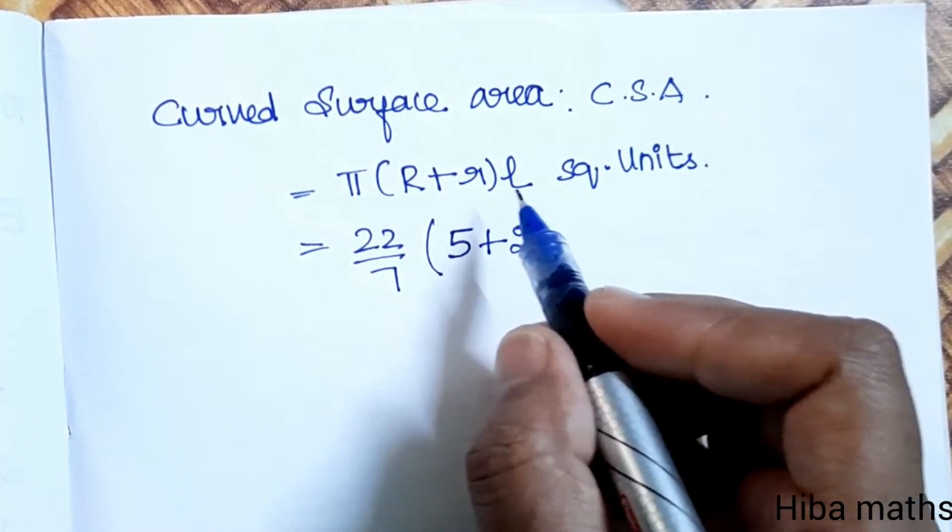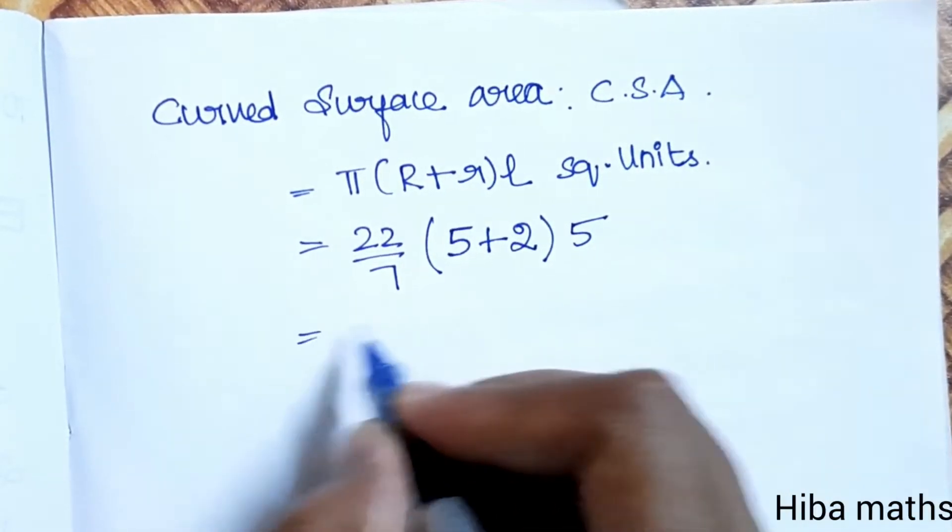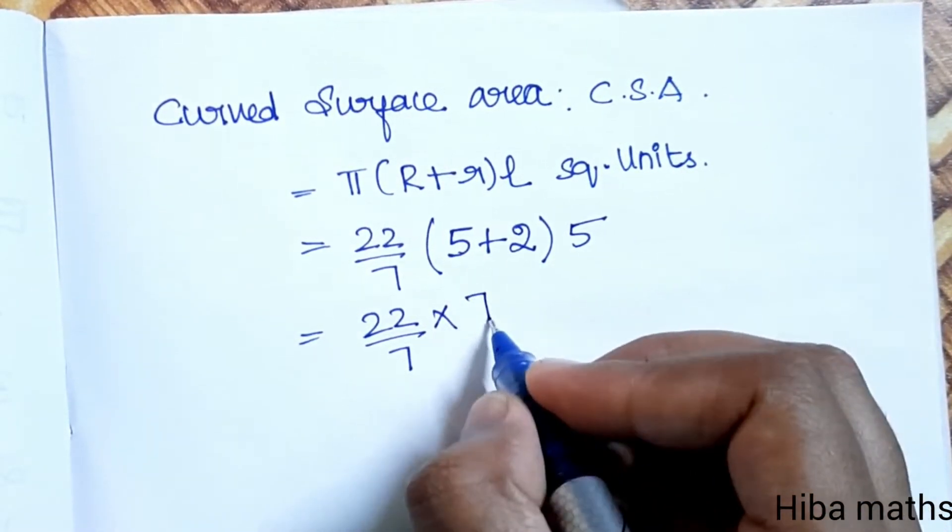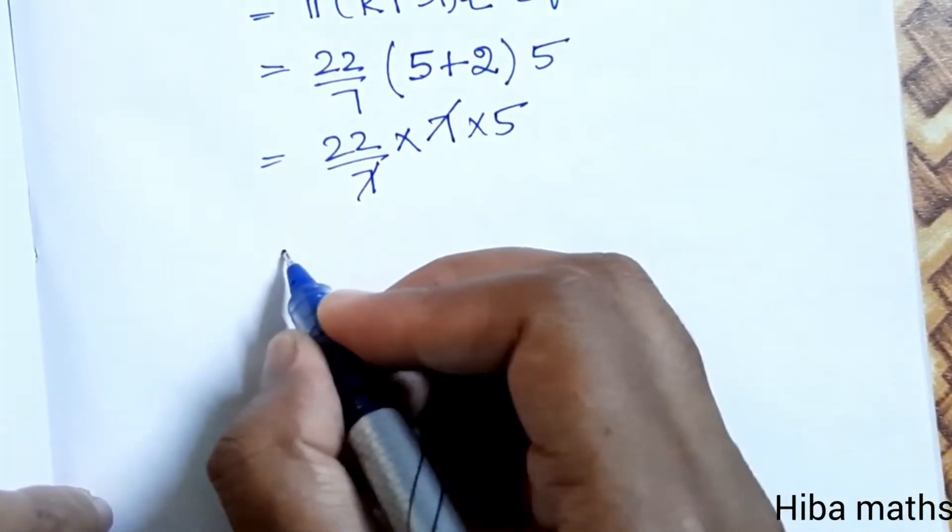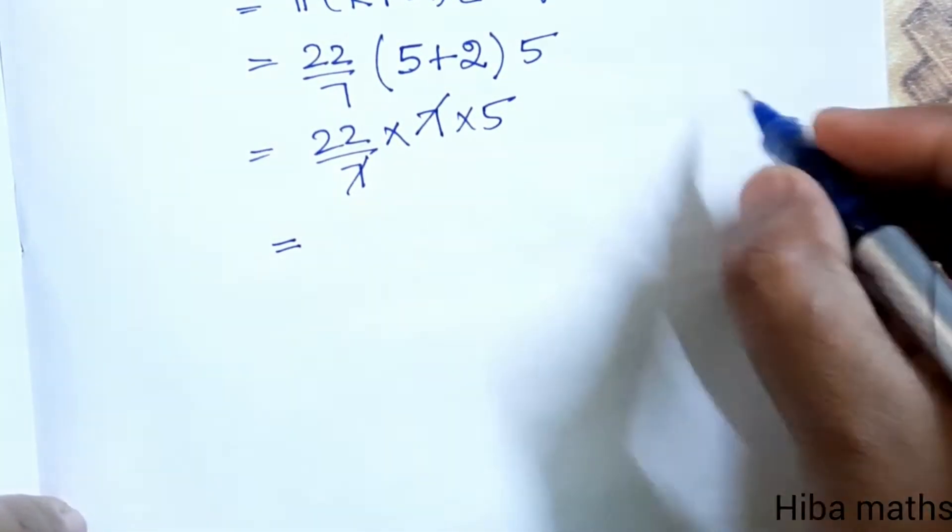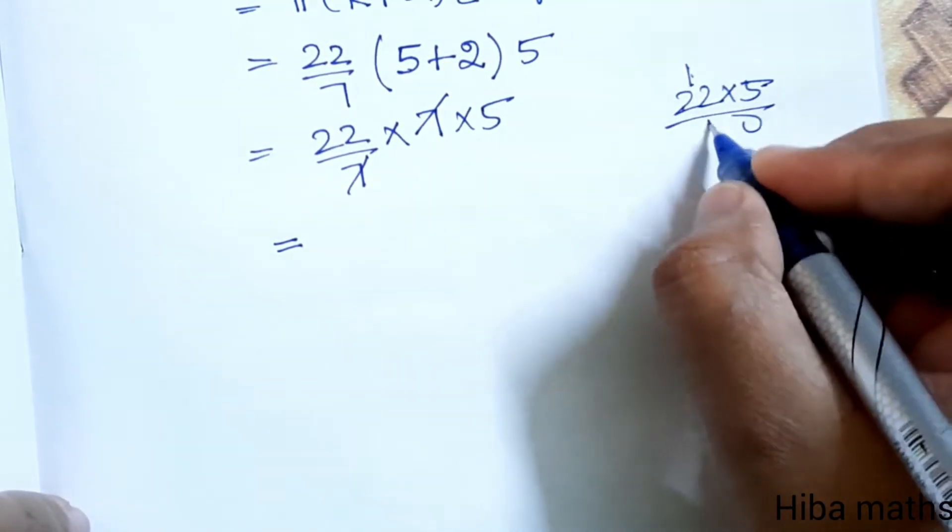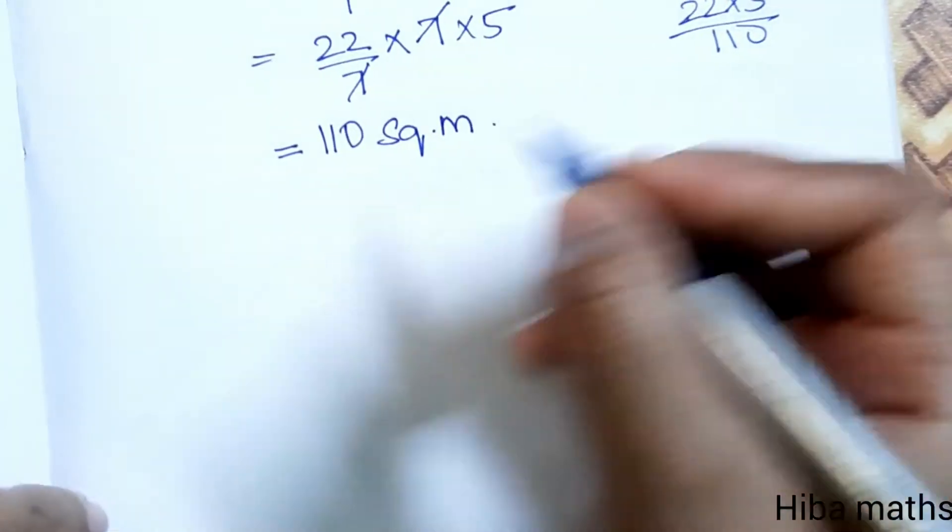Small r value 2 into L value 5. So 22 by 7 into 5 plus 2 is 7 into 5. Seven and seven cancel, leaving 22 into 5 which equals 110 square meter.